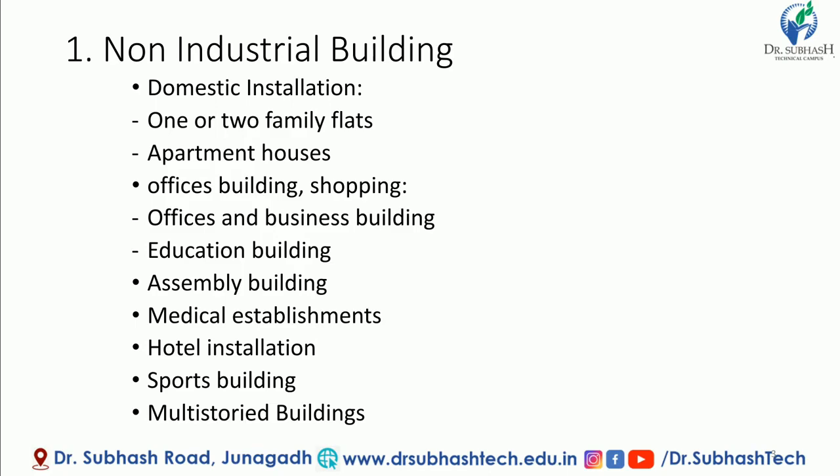Assembly Buildings, like Lok Sabha, Rajya Sabha, and any hall. Medical Establishments, like hospitals and nursing colleges. Hotel Installation — the type of installation used in hotels is classified as Hotel Installation. Storage Buildings, Sports Buildings, and Multi-Storied Buildings — the types of electrical installation used in these will be discussed in this module.